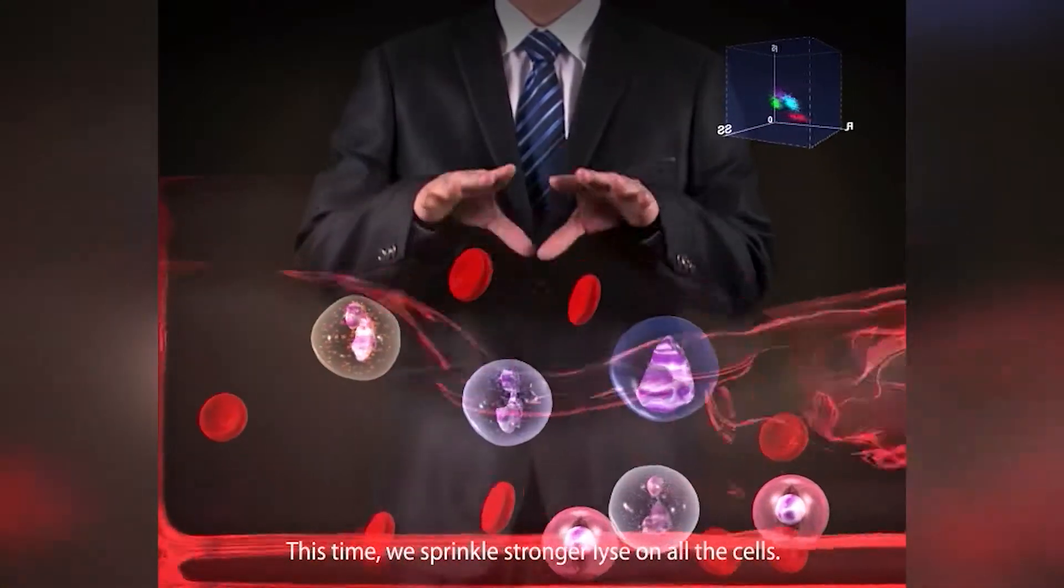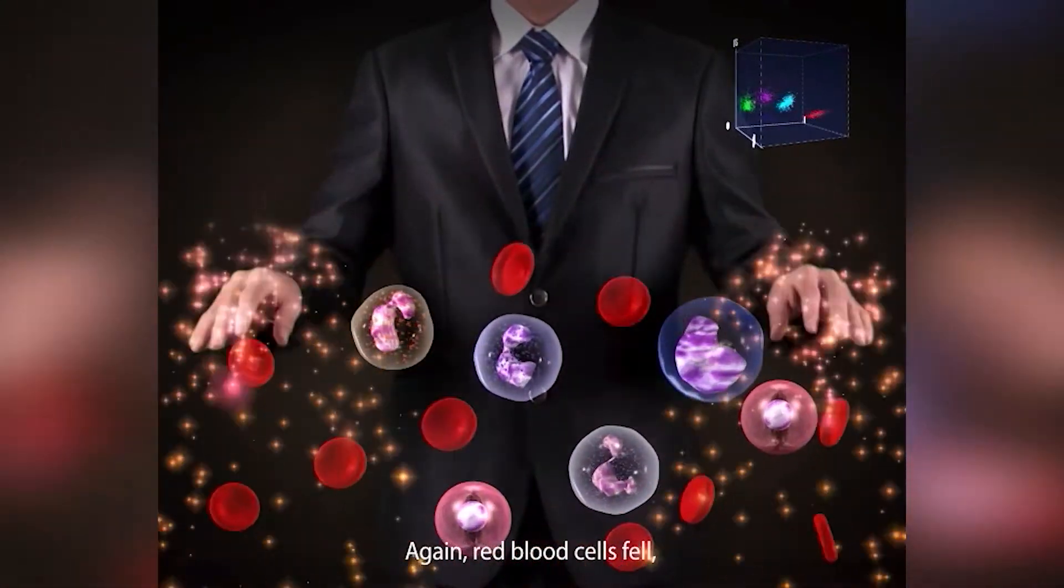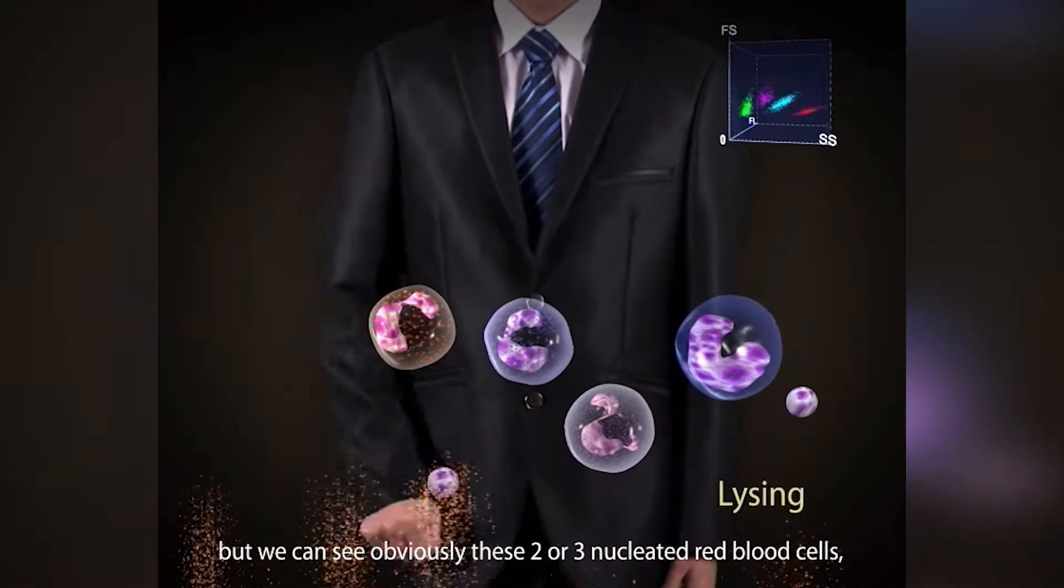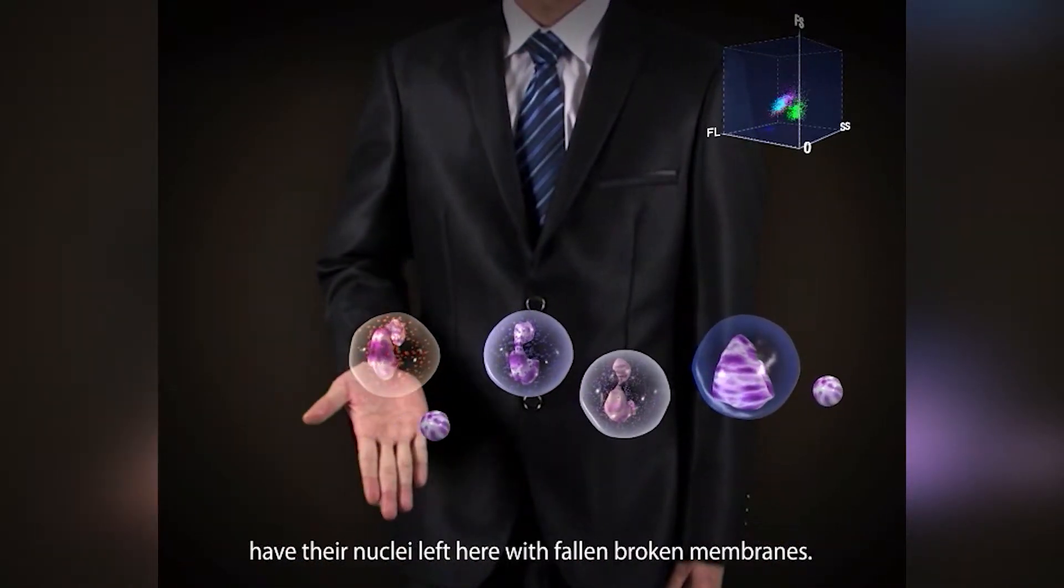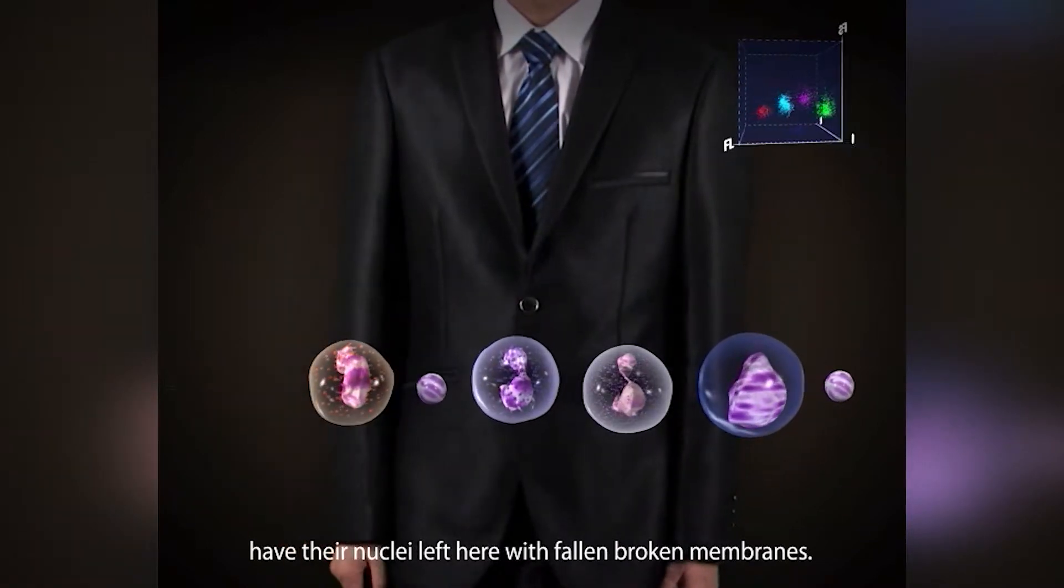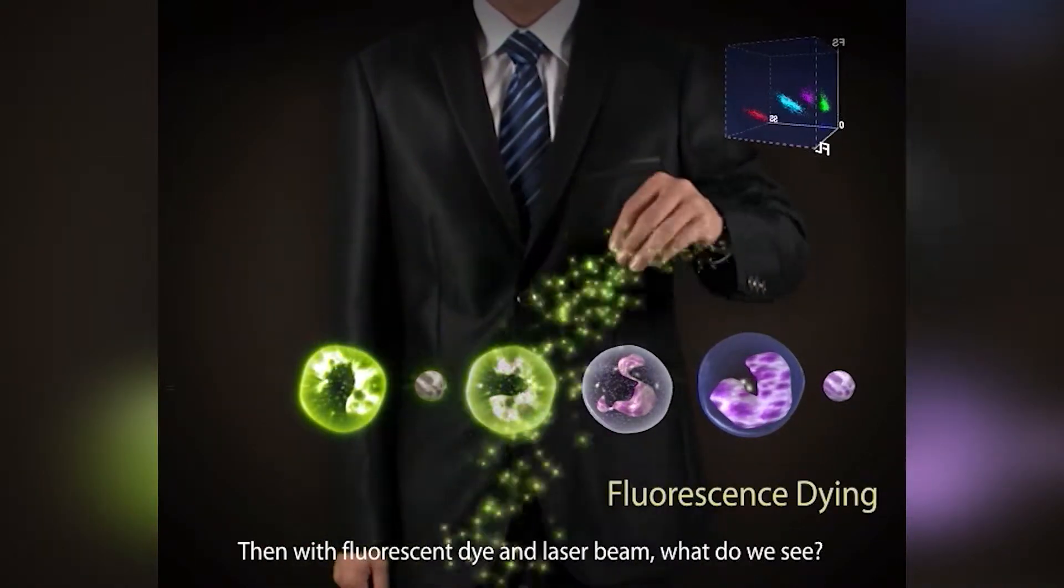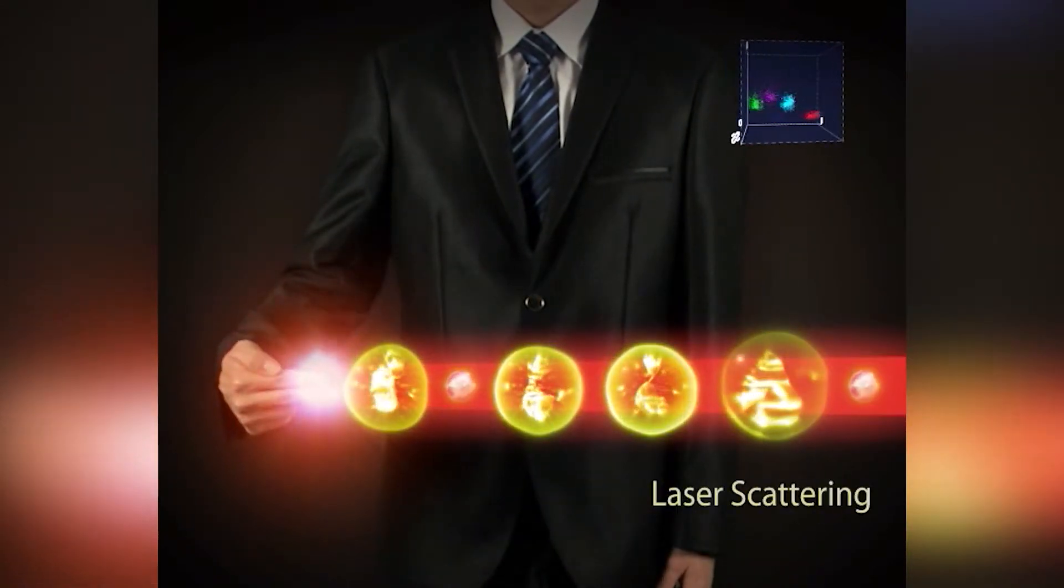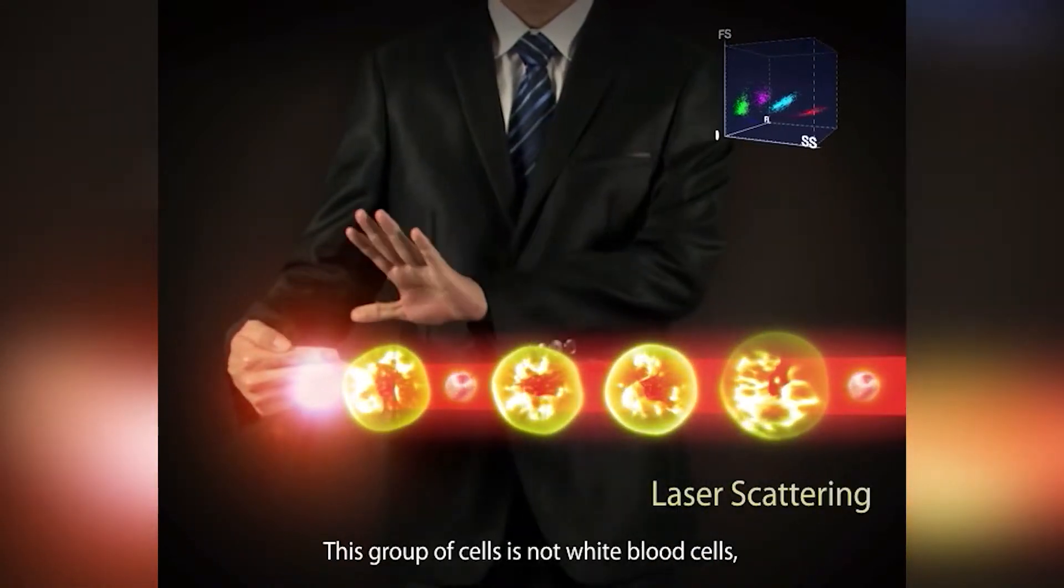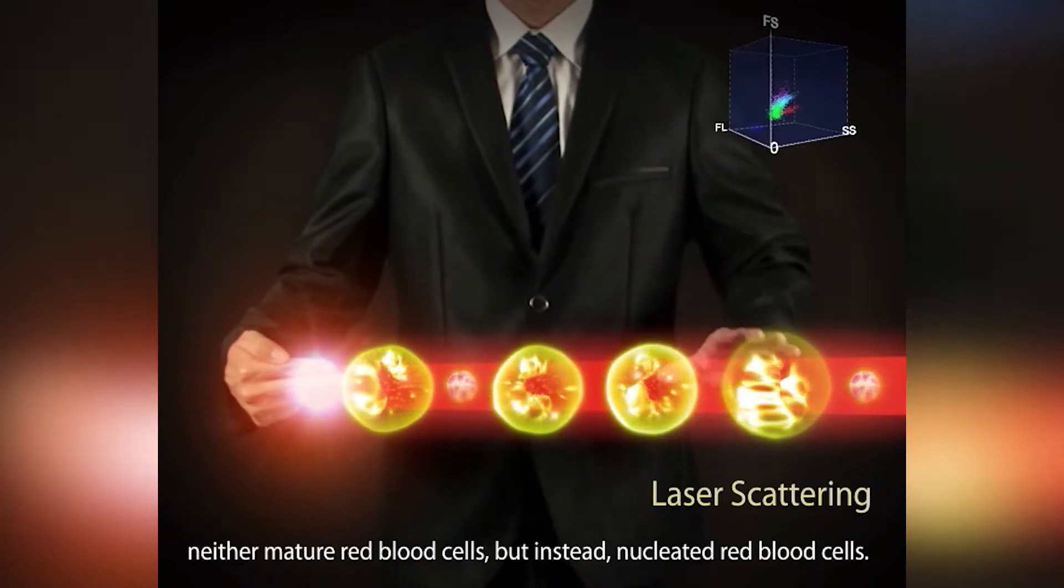This time we sprinkle stronger lysis on all the cells again. Red blood cells fell, but we can see obviously these two or three nucleated red blood cells have their nuclei left here with fallen broken membranes. Then with fluorescent dye and the laser beam, what do we see? This group of cells is not white blood cells, neither mature red blood cells, but instead nucleated red blood cells.